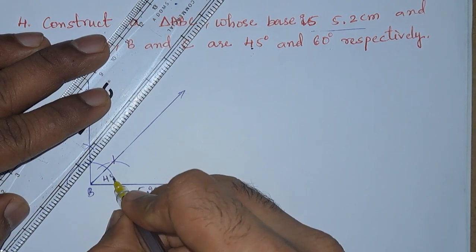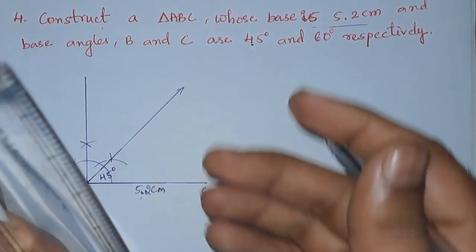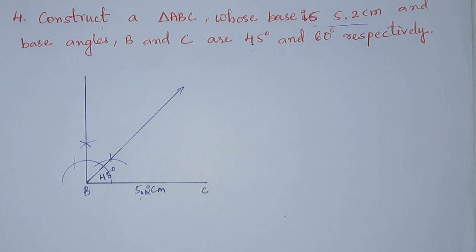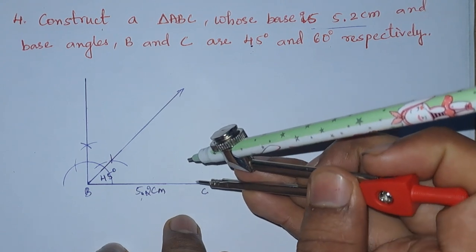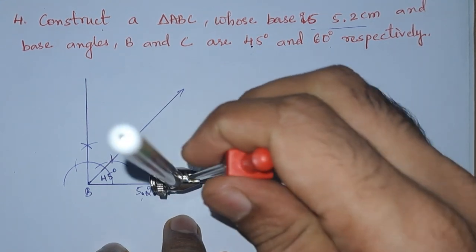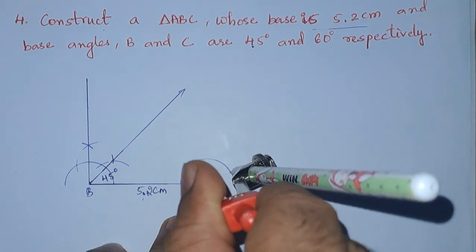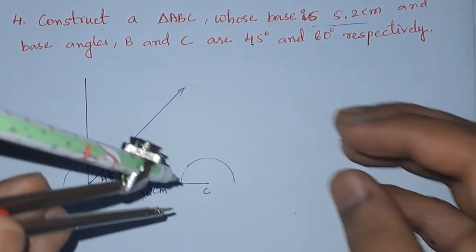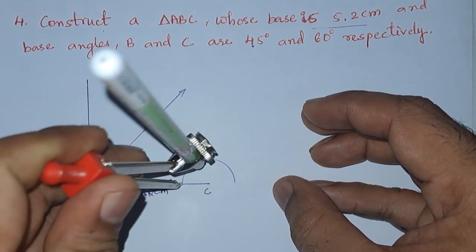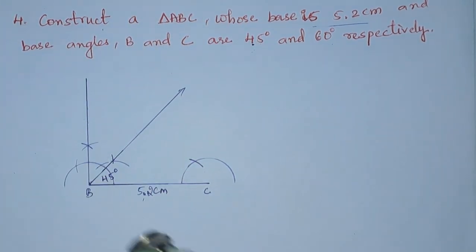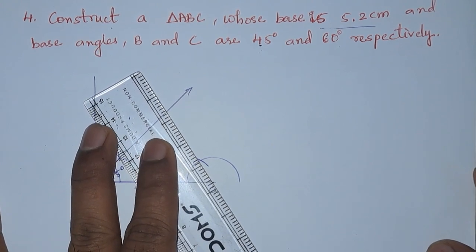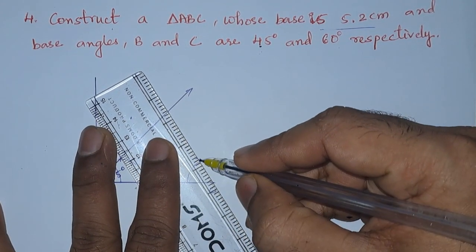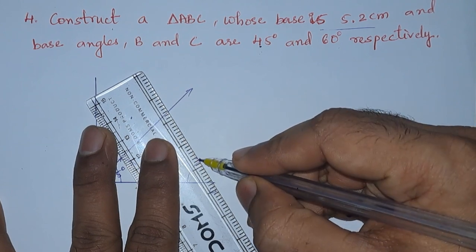This is the 45 degree arc. Next we need a 60 degree angle from C. With any radius draw a semicircle from C, then from this point make a cut — this gives the 60 degree cut. Now join C and the point where it cuts the semicircle.